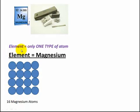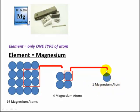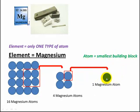Remember that an element is only one type of atom. So the element is magnesium. If we look at a section we've got four magnesium atoms, and if we look at just one we've got one magnesium atom - this is your smallest building block. An atom is the smallest building block, so this makes up this, which makes up this, and millions of them will make up a piece of ribbon.